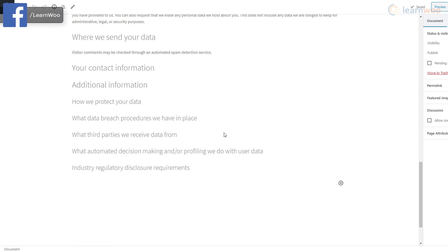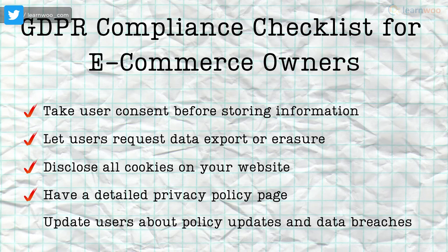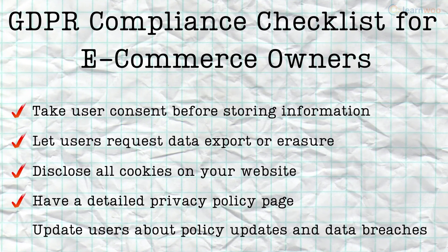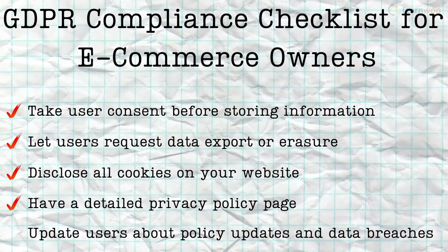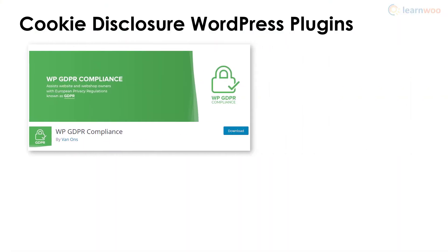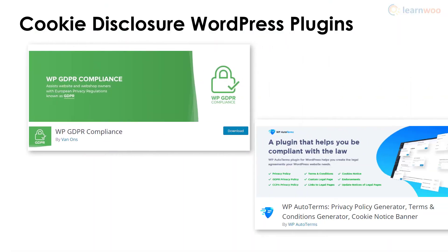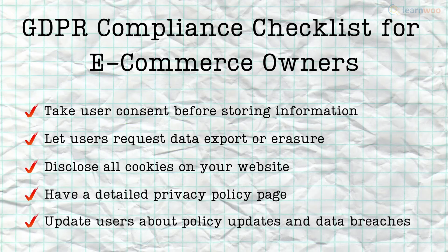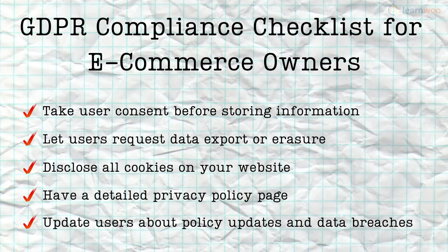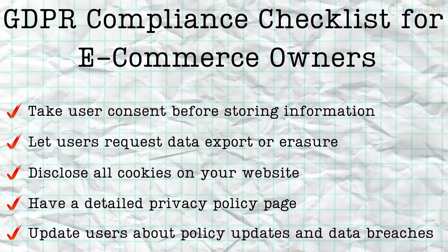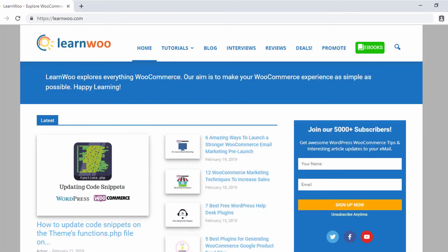If you update your privacy policy or your website becomes the target of a data breach, GDPR requires you to promptly inform your users. You can use plugins like WP GDPR Compliance and WP Autoterms to add announcement bars and encrypted audit logs to your website. With these settings, your e-commerce site is ready for GDPR and the future.